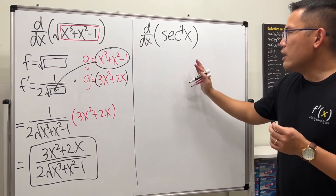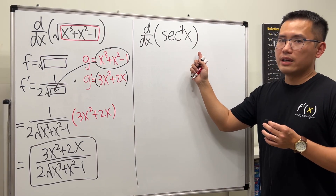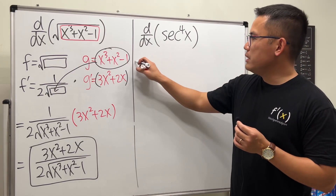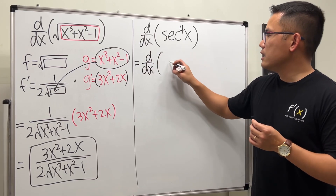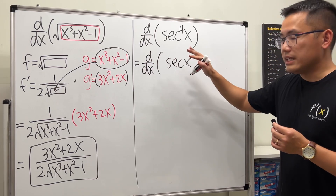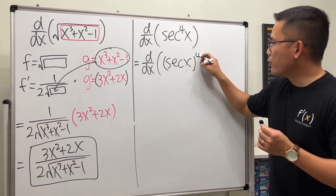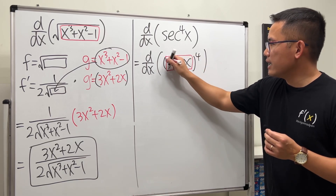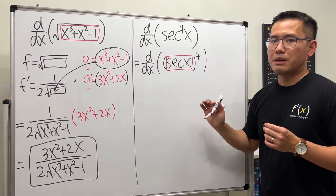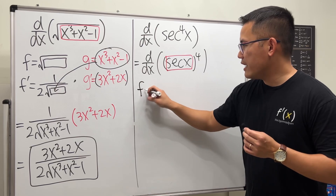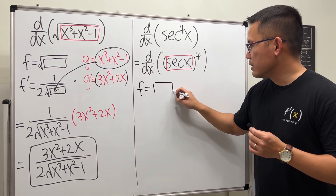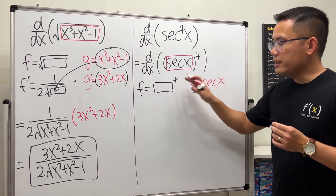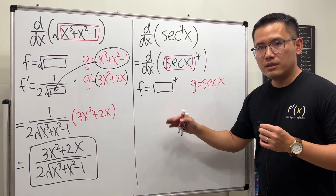For the second example, we have secant to the fourth power of x. We need to understand this notation: it really means secant x raised to the fourth power. The inner function is secant x, so it's a box to the fourth power. f is just a box to the fourth power, and the inside function g is secant x. Break it down — it's easier and less intimidating.